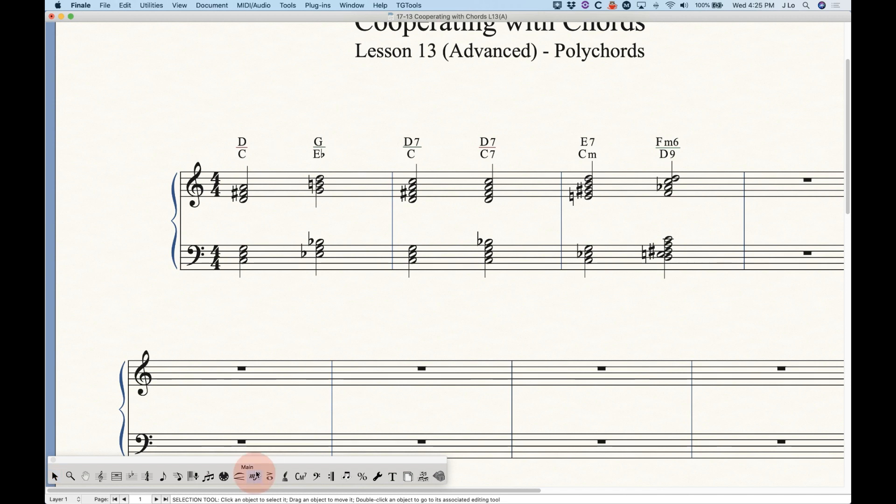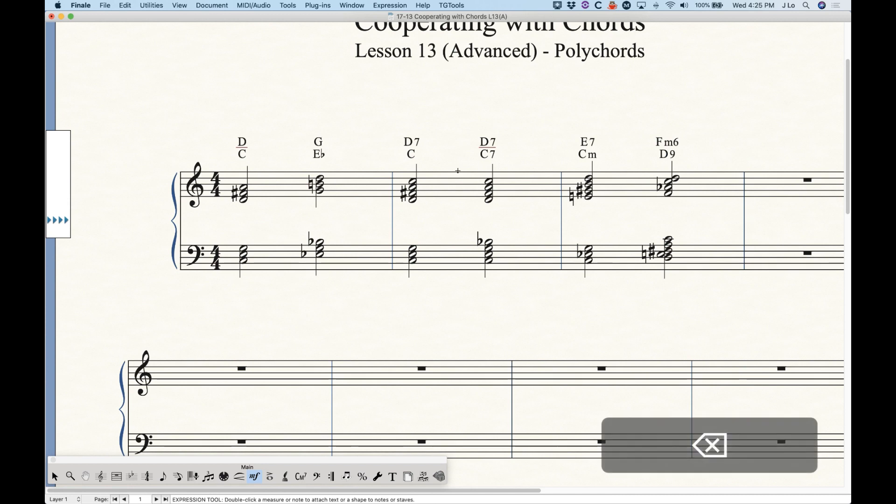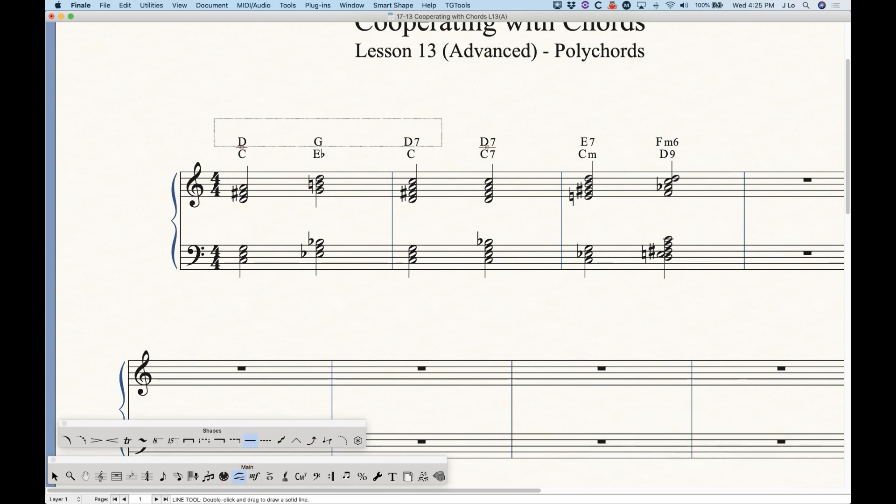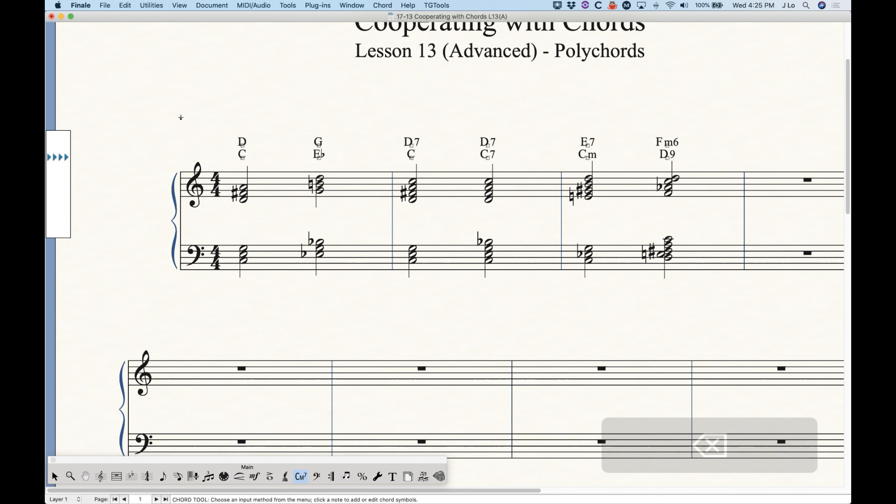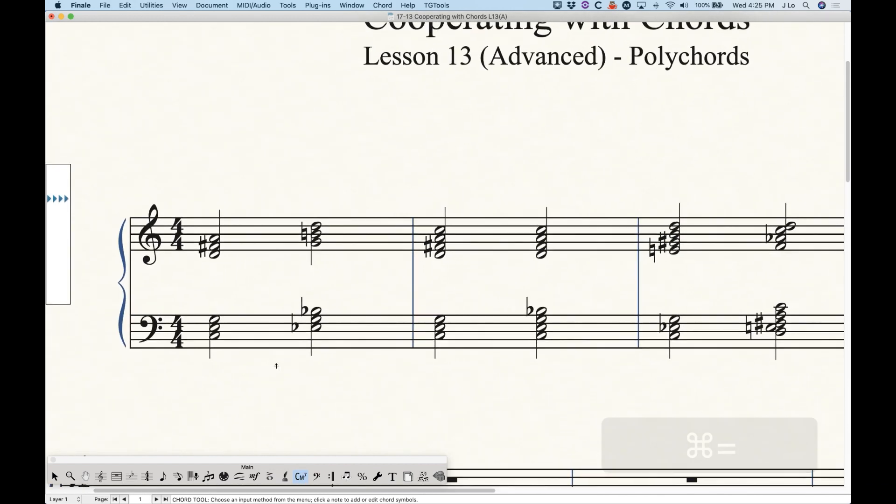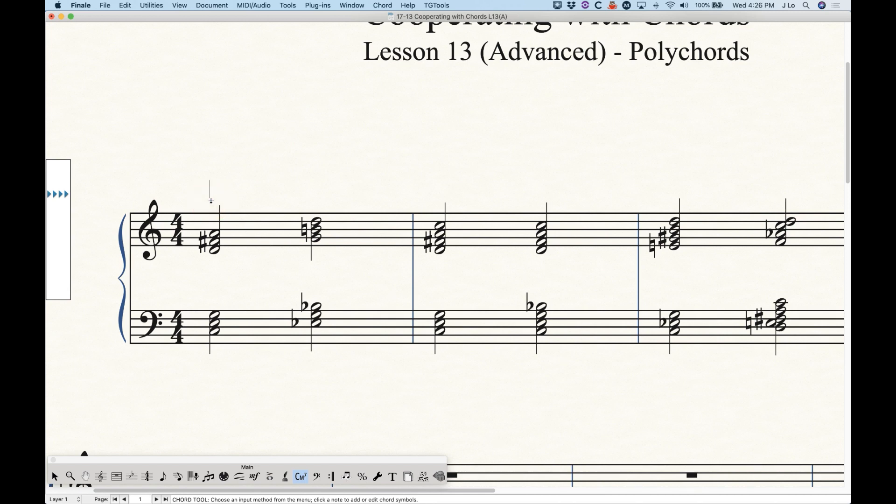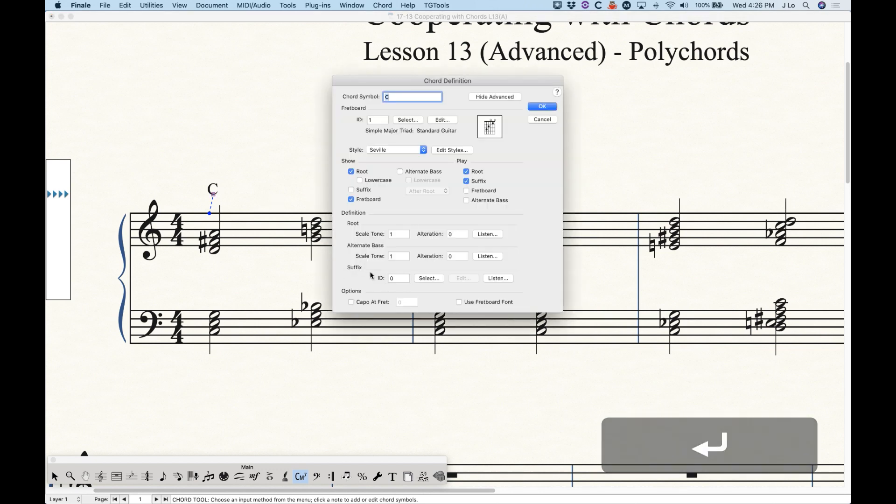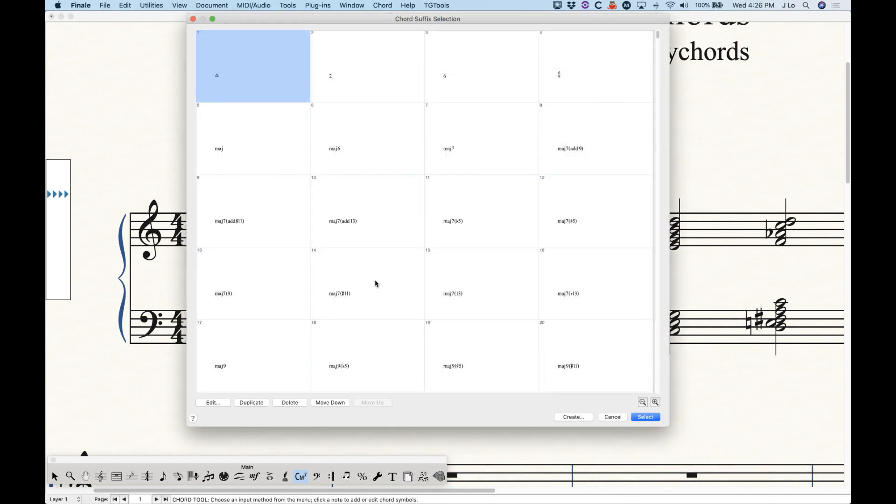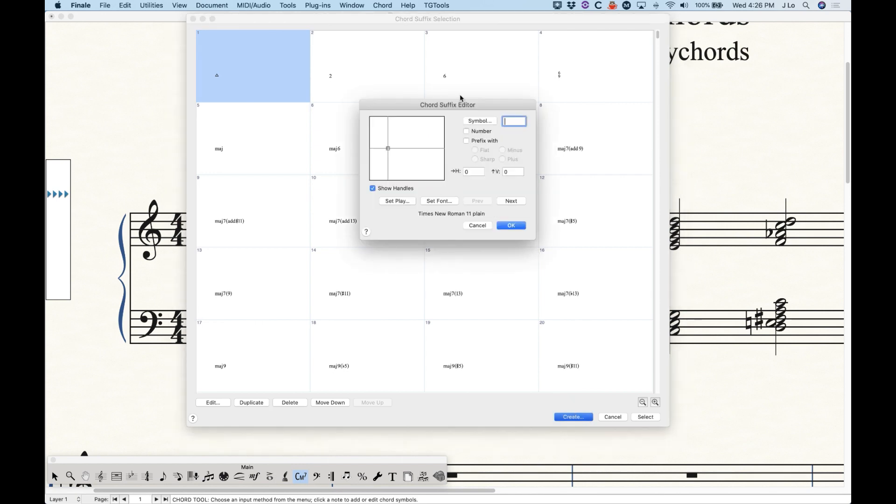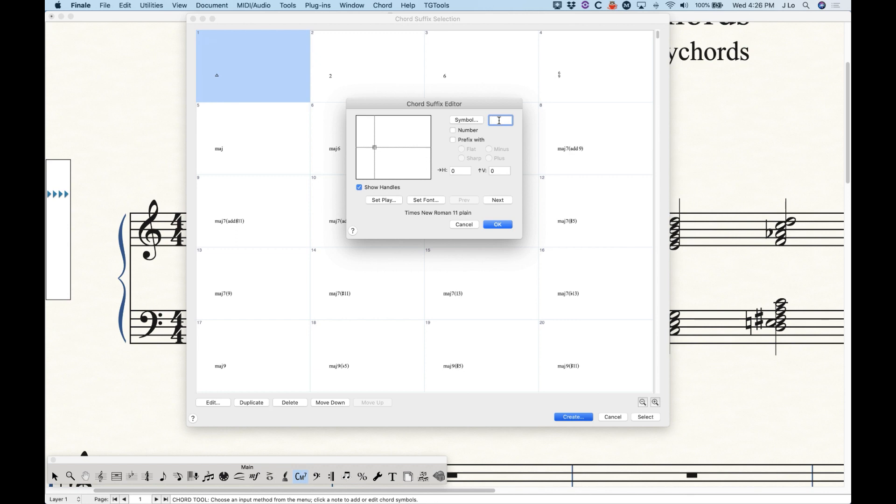So all that being said, I'm going to show you one final hack version of this. And I'm just going to very quickly delete all of this so we can start over. And that is to do this all within the chord tool. Now, the trick to this is that instead of creating an expression to use to make that underscore character, we're going to create it as a suffix. So let me just type a chord in here so I can get into the suffix editor or the suffix selection dialog box. And I'm going to create a new suffix.